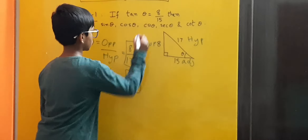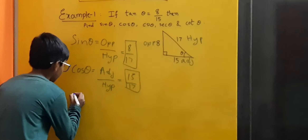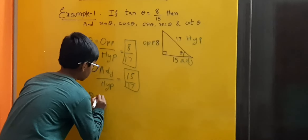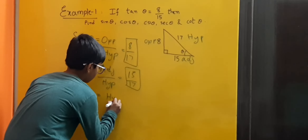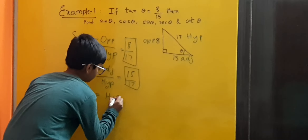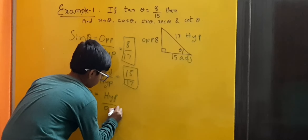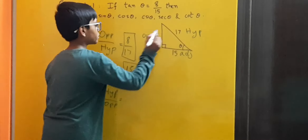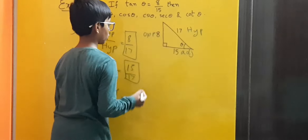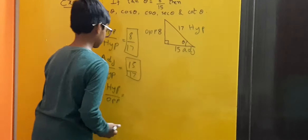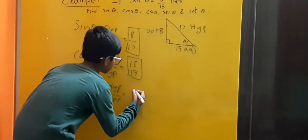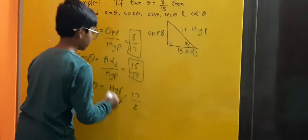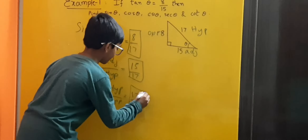Now let us find cosecant theta. We have the formula: cosecant theta is equal to hypotenuse by opposite. Here, 17 is the hypotenuse and 8 is the opposite, so we get 17 by 8. Therefore, cosecant theta is equal to 17 by 8.